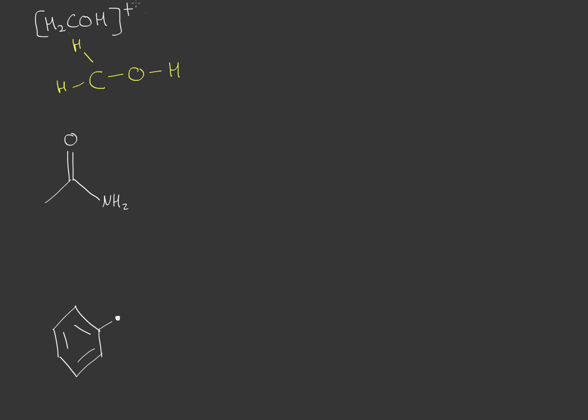Now we have a positive charge on this. If we were to draw the lone pairs on oxygen, normally we would imagine the positive charge would be on the carbon since it might be missing a third hydrogen. Now how would we draw a resonance form?